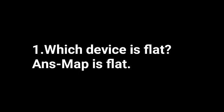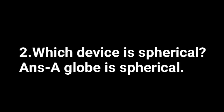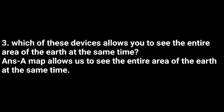First question: which device is flat? Answer: a map is flat. Second question: which device is spherical? Answer: a globe is spherical. Third question: which of these devices allows you to see the entire area of the earth at the same time? Answer: a map allows us to see the entire area of the earth at the same time.